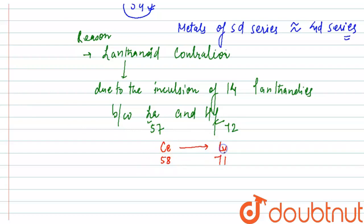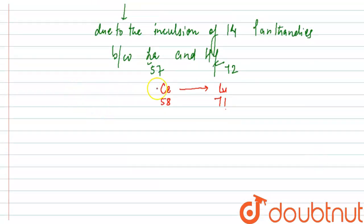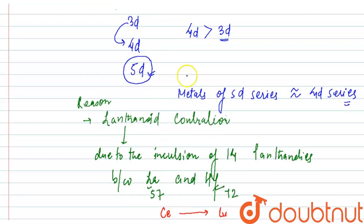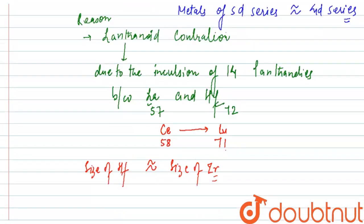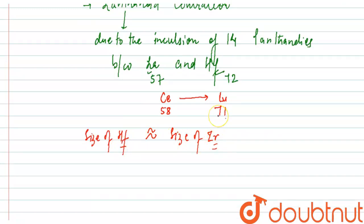So due to this reason, the size of hafnium becomes nearly equal to the size of zirconium. Zirconium is from the 4d transition series, and from 5d transition series we have hafnium. So hafnium and zirconium become nearly equal